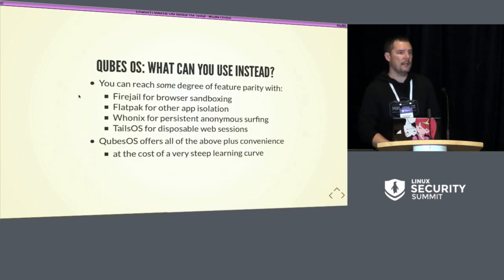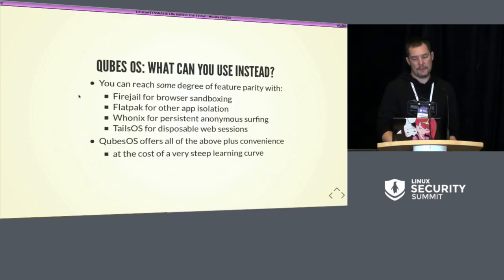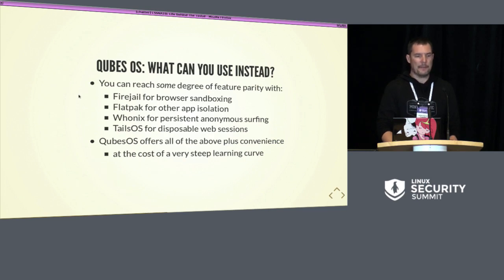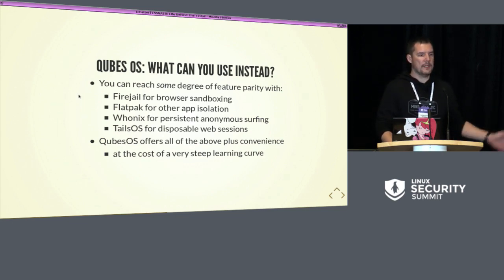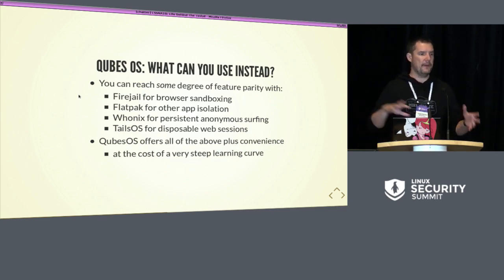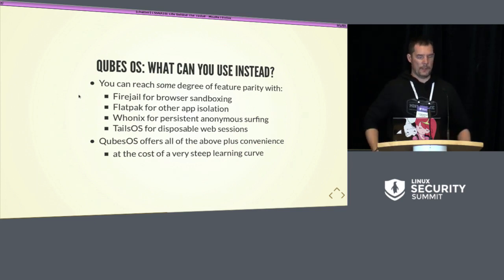What can you use instead? You can reach some degree of feature parity with Qubes OS using Firejail sandboxing for Firefox sessions, Flatpak or other sandboxing for other applications, Whonix for persistent anonymous surfing, and Tails OS for disposable web sessions. But Qubes OS offers all of the above with convenient ways of copying files and doing disposable things at the click of a button — and it works 99% of the time.